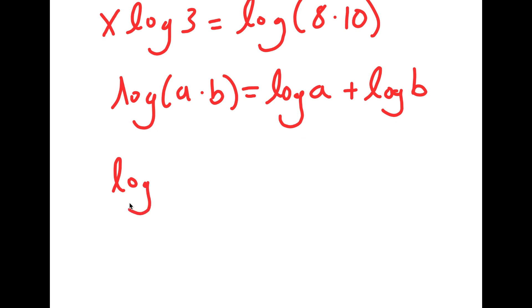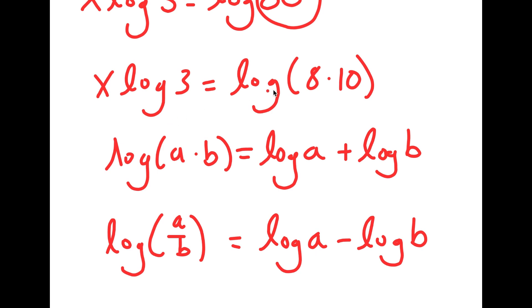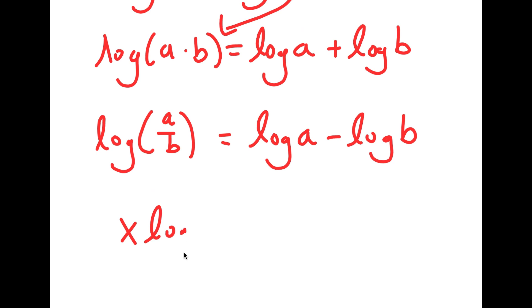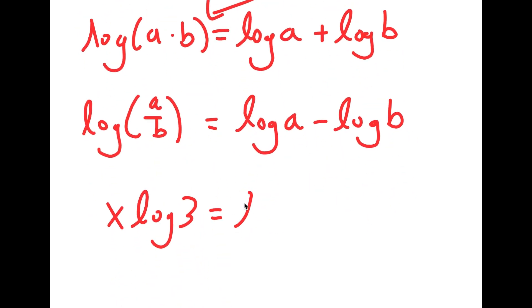There is also log a over b. And if I have something in this form, this is the same thing as log a minus log b. So now going back to the problem, we have log 8 times 10, and we can use this property. So we can think of 8 as a and 10 as b. So this is going to equal x log 3 is equal to log of 8 plus log of 10.